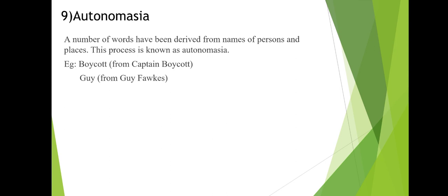The next process is eponymy, also called autonomization. A number of words have been derived from the names of persons and places; this process is known as autonomization. For example, the word 'boycott' comes from the name Captain Boycott, and 'Guy Fawkes' gives rise to another word. Forming words from names of persons or places is the process of autonomization.